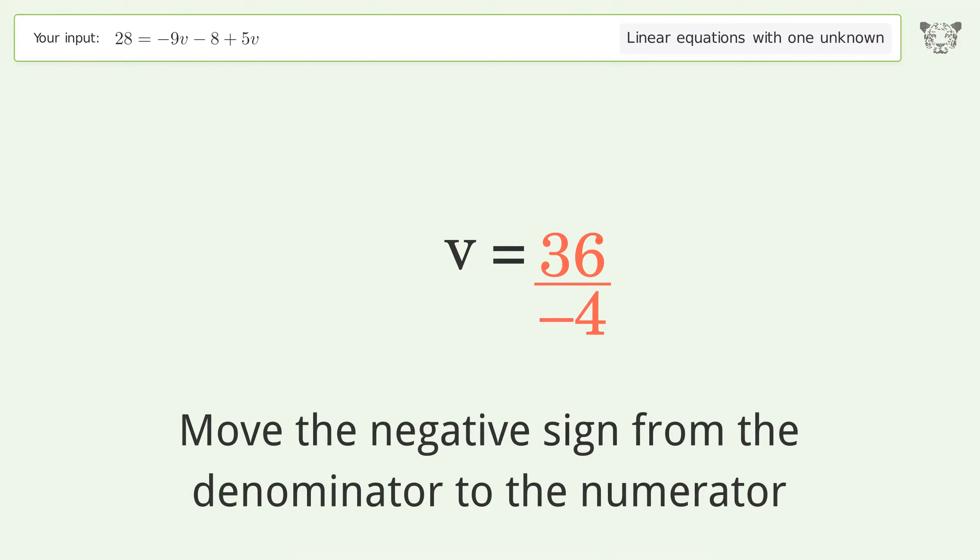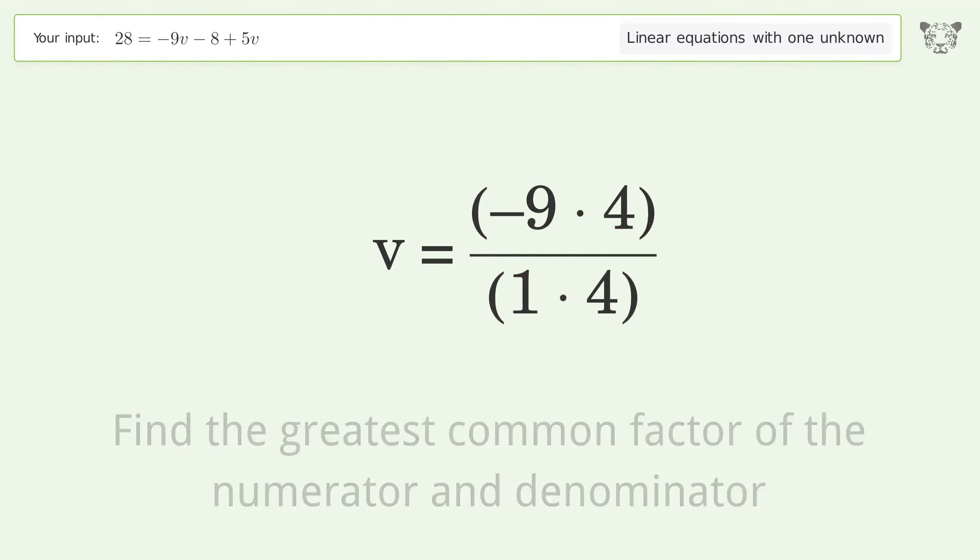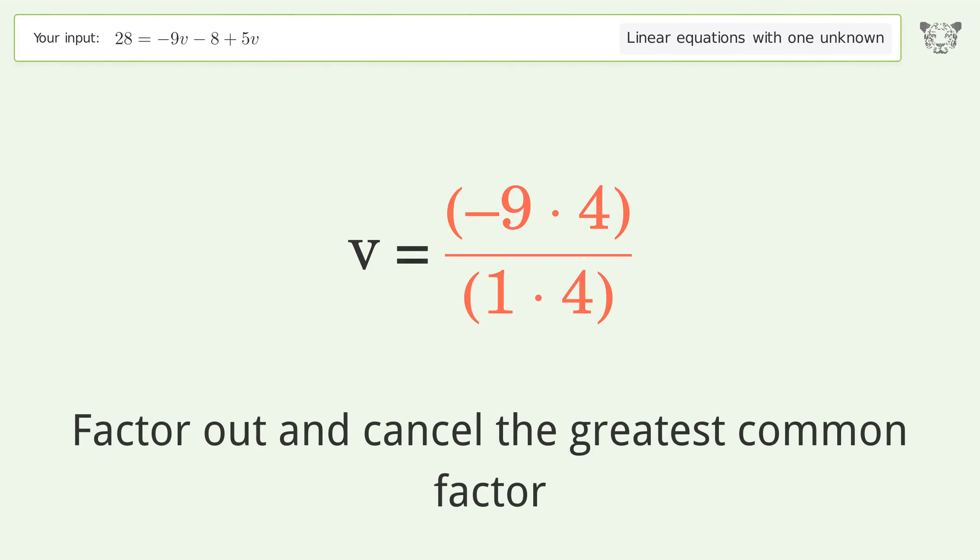Move the negative sign from the denominator to the numerator. Find the greatest common factor of the numerator and denominator. Factor out and cancel the greatest common factor.